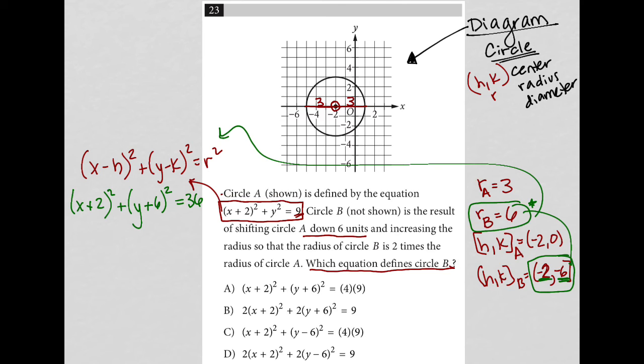So which answer is mine? I have x plus 2 squared, y plus 6 squared equals 36. They don't give me 36. I have 4 times 9, which is 36 here. So it looks like choice A is the right answer. Let's just check.